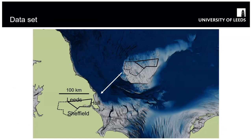Just for context on the size of this dataset — the solid black outline is Dogger Bank Tranche B, my PhD study area. If you transpose that onto the UK, the seismic line spacing of one line every 100 metres would go all the way from Hull to Leeds — a huge amount of data covering a huge area.